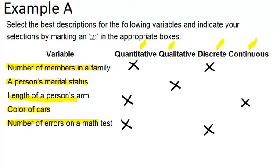And I realize we forgot the color of cars. Color of cars would be qualitative because a color is not a number so that would be qualitative as well.